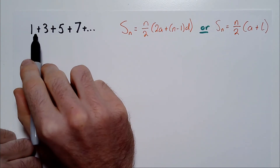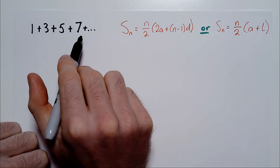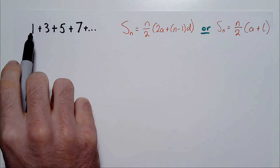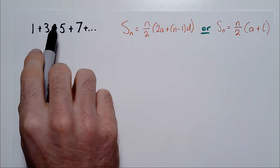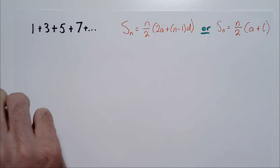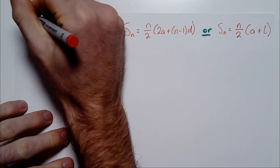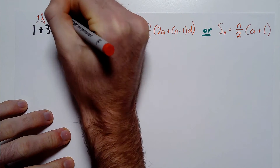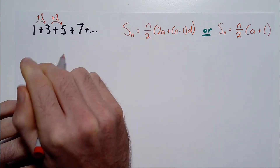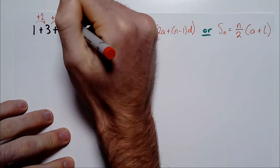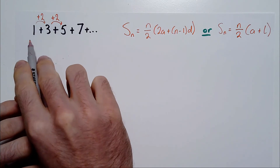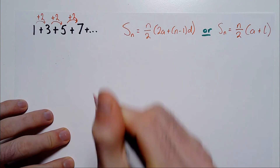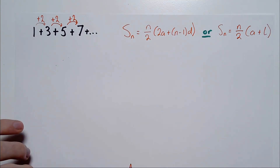We could have 1 plus 3 plus 5 plus 7. We have a pattern emerging where each term is being added by 2 to get to the next term — 1 plus 2 gives you 3, and 3 plus 2 gives you 5. So we have a common difference. The difference between 3 and 1 is the same as between 5 and 3, and between 7 and 5. That's why it's called an AP.